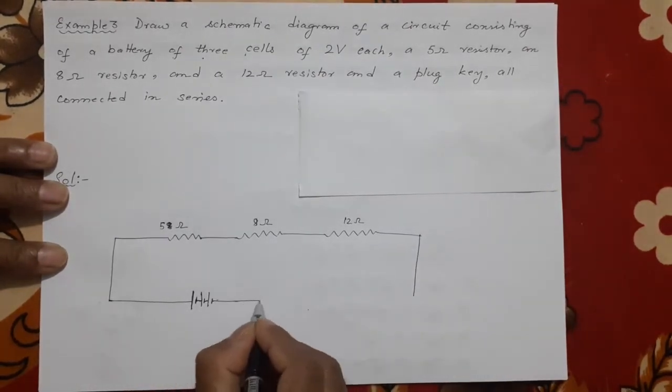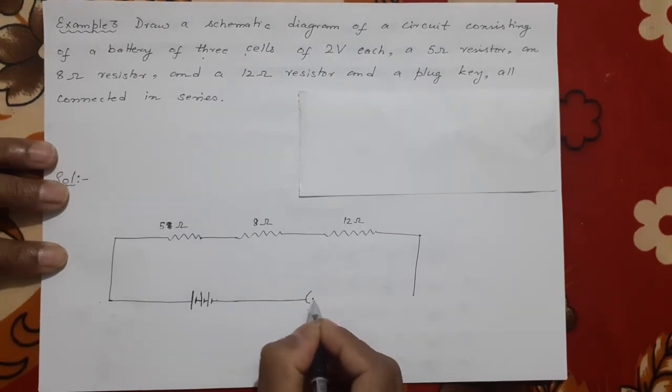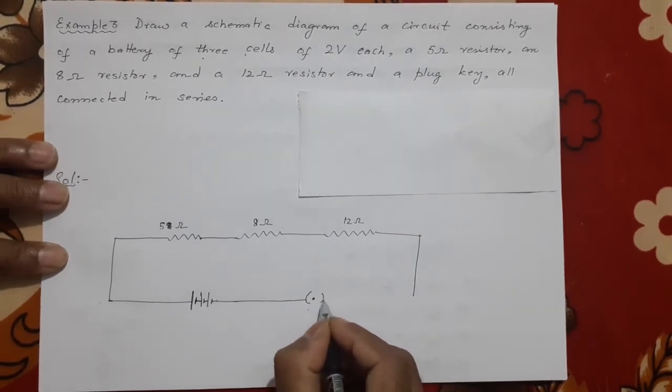And what else? Plug key also required, that means on and off facility should be there. So this is that plug key means this is the diagram to show.